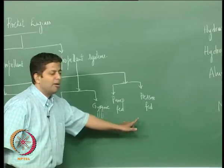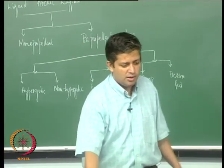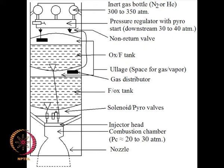Moving on to bi-propellant systems: first, pressure fed vs pump fed. A bi-propellant pressure fed system has inert gas bottles with a pressure regulator — both nitrogen and helium are used. There are separate oxidizer and fuel tanks. The pressure downstream of the gas bottle in the tanks is around 30 to 40 bar, and in the combustion chamber it comes down to around 20 to 30 bar. You then have the combustion chamber and the nozzle.